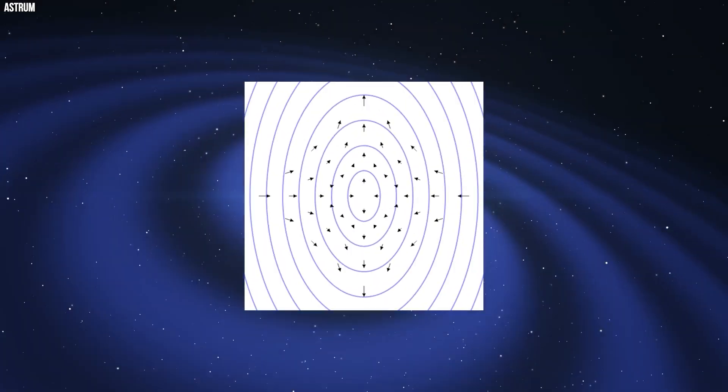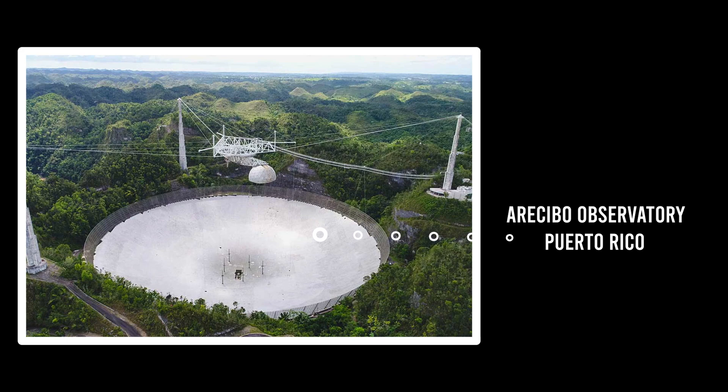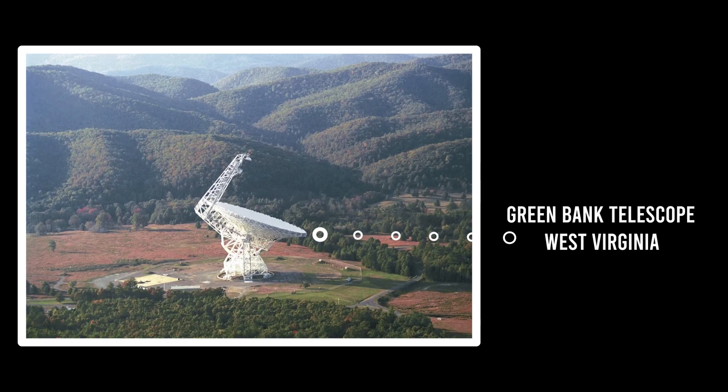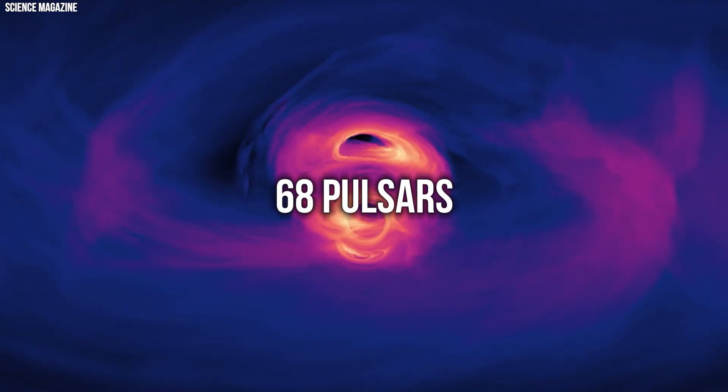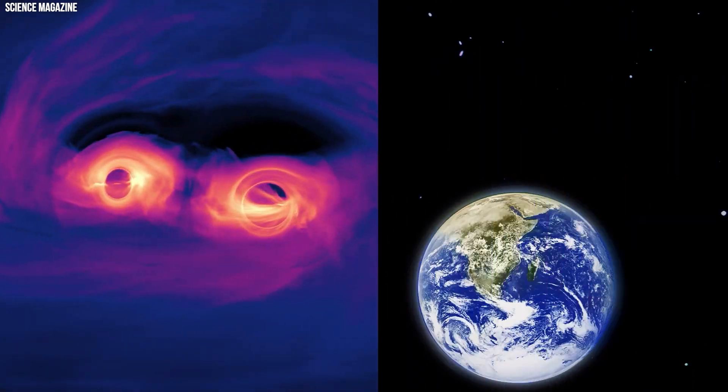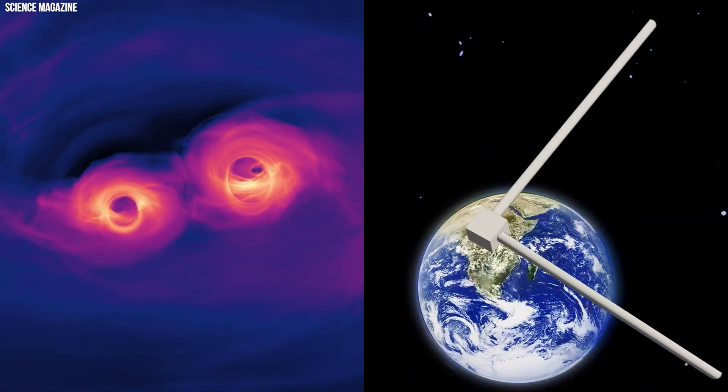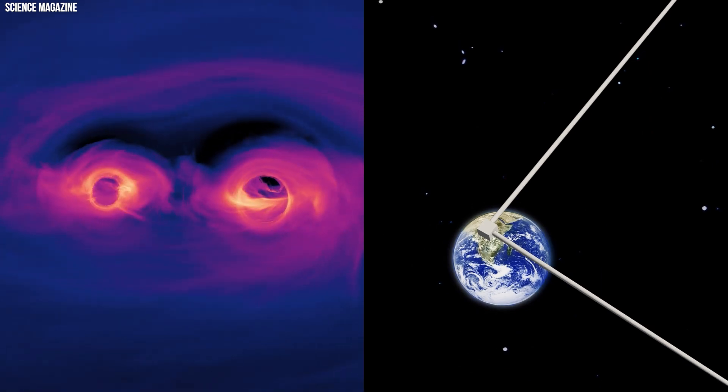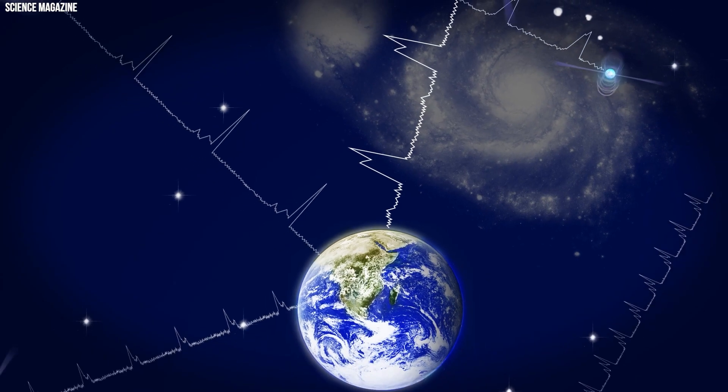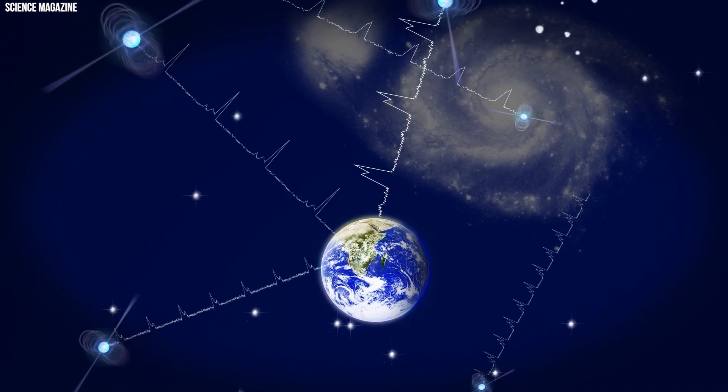Utilizing three radio observatories—the now-defunct Arecibo Observatory in Puerto Rico, the Green Bank Telescope in West Virginia, and the Very Large Array in New Mexico—NanoGrav transformed 68 pulsars within the Milky Way into an extensive gravitational wave antenna, effectively covering the entire galaxy. This distinctive and sensitive gravitational wave detector is known as a pulsar timing array.